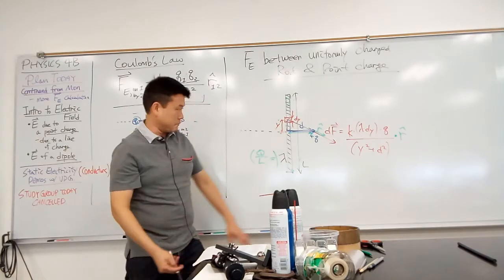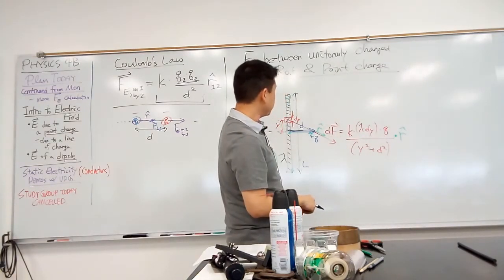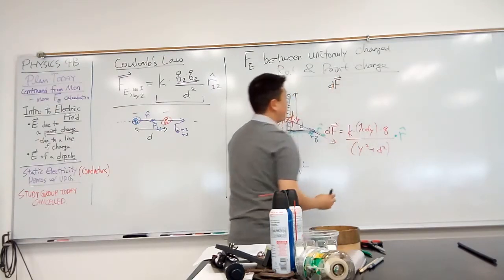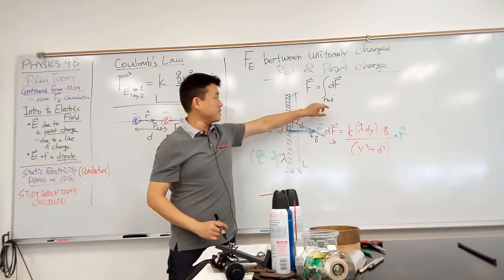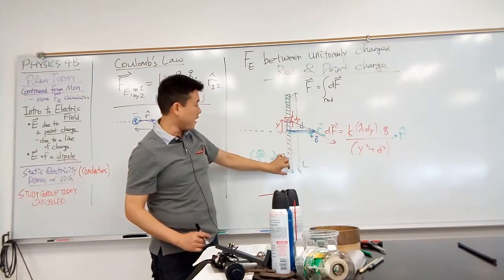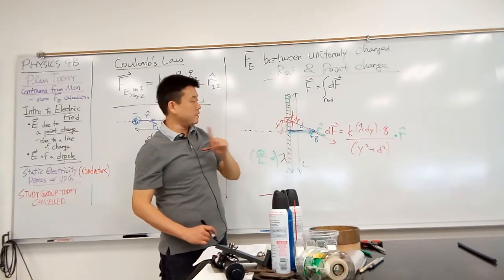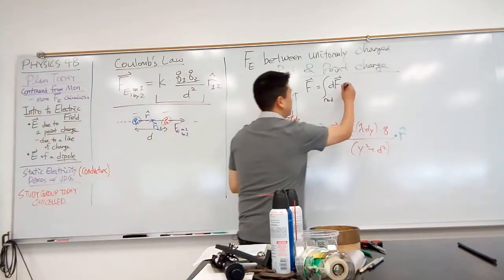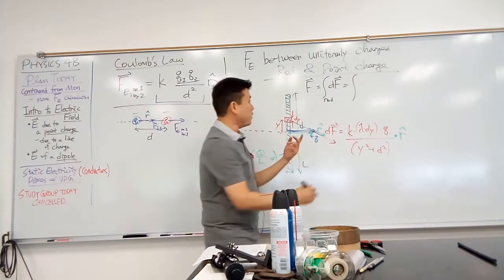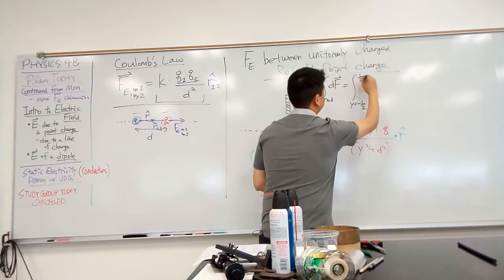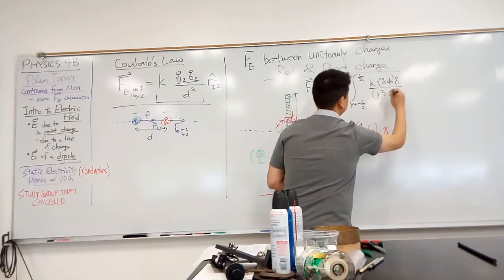You take this expression, df, and if you integrate it along the rod, then you should be able to get the whole force. Because imagine getting contribution from small sections of the rod. This small section moves from one end of the rod to the other end of the rod to get all the contributions. That will give you the force. Now, if you are doing the calculation this way, you say this is equal to all of this integrated. So if you are integrating along the rod, then you are varying the parameter y. You would say y goes from minus l over 2 to l over 2, k lambda times dy, q over y squared plus d squared, r hat.